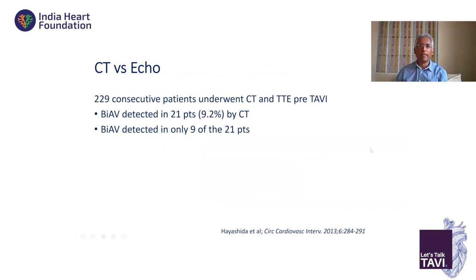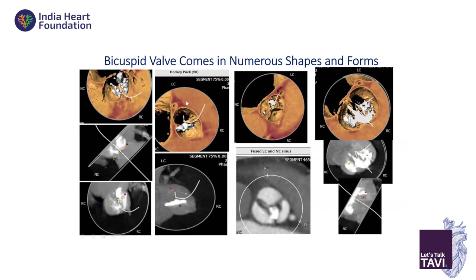Bicuspid valve comes in numerous shapes and forms — from what looks acceptable to what looks just like a big white blob of calcium. You can almost predict a reasonably good result in some, but in others you are almost in the land of the gods wondering what will actually happen once you deploy or even try to cross the valve. My eyes were opened when I started proctoring in Asia — Vietnam, China, India. What they see there is very, very different, and the age group is much younger as well.